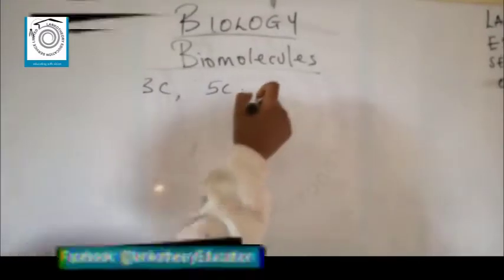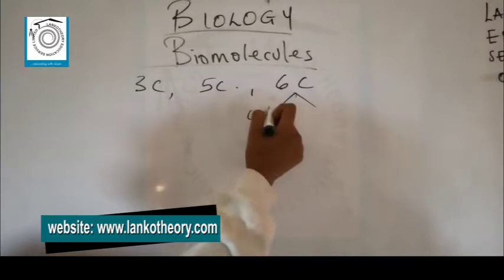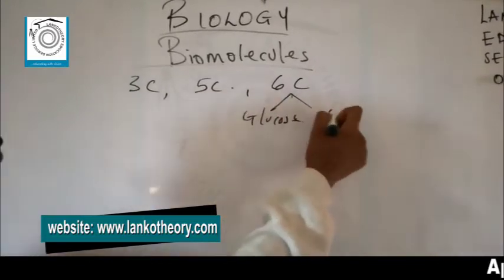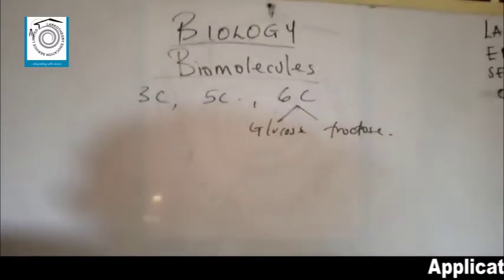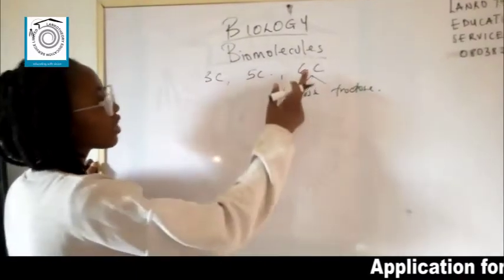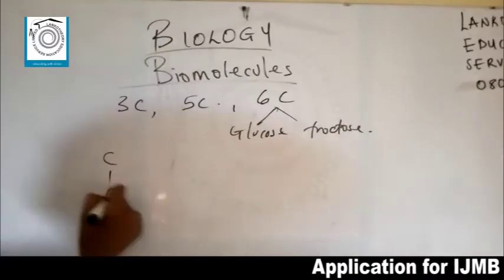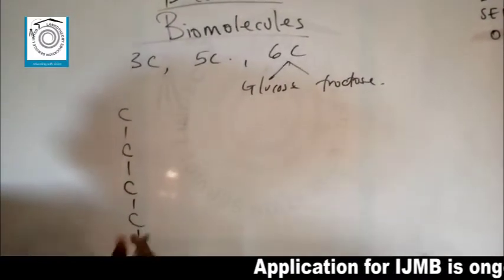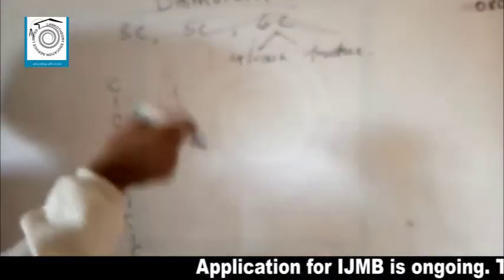Now we shall move into the six-carbon sugar, discussing glucose and fructose and their structures. For glucose, the six-carbon straight-line structure is numbered one through six. One thing to note is that glucose and fructose are both six-carbon sugars, although they have different functional groups — this is called functional group isomerism.